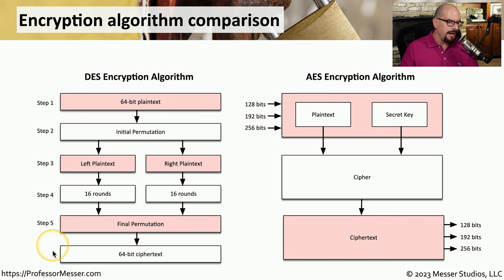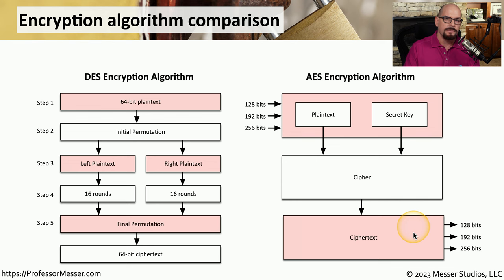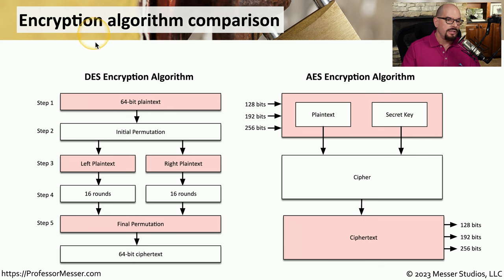The DES encryption algorithm has five different steps, which include breaking up the data into a left plaintext and right plaintext to finally come up with a 64-bit ciphertext. AES works a little bit differently — you take a plaintext and a secret key, add it to a cipher, and finally get the ciphertext. There are also different versions of AES that can produce different levels of output. You obviously would not be able to encrypt with DES and decrypt with AES — you have to be sure you're using compatible encryption and decryption algorithms on both sides of the conversation.